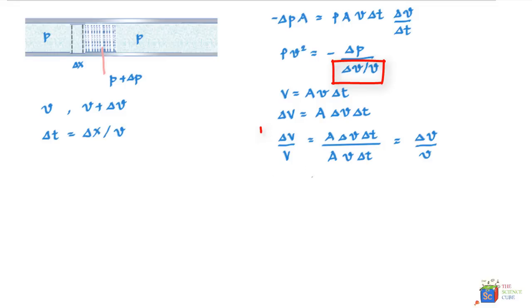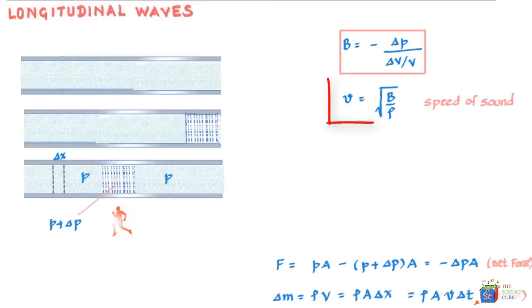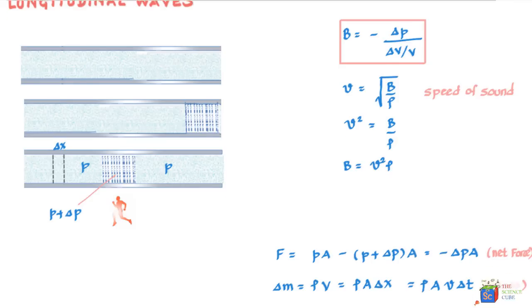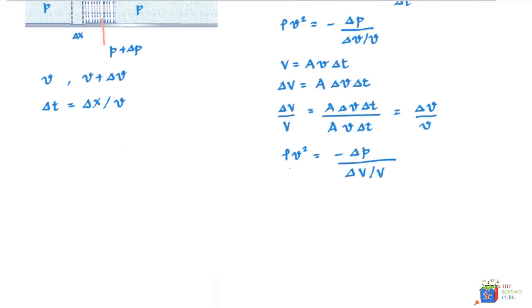What we get is rho V square equals minus delta P upon delta V upon V. And we know from this equation over here that if you square both the sides, what you get is V square is equal to B upon rho, or B is equal to V square rho. And therefore we can write V square rho for B. So we can say V is equal to minus delta P upon delta V upon V, and that's exactly what we wanted to establish over here. We started with this as the definition of B, and that's exactly what we have derived over here.